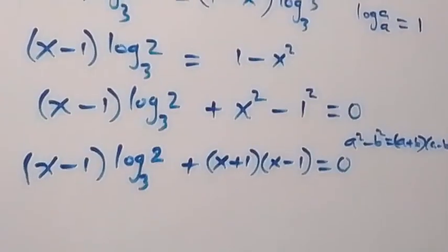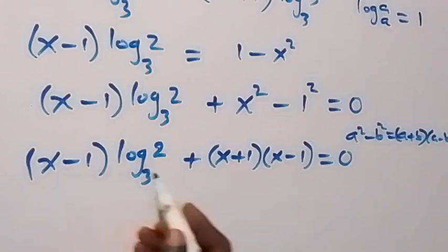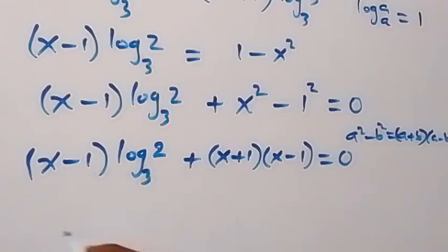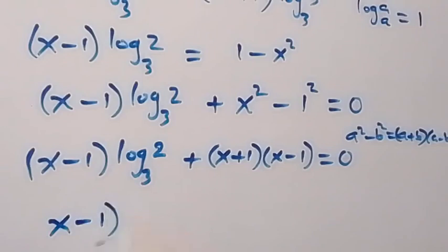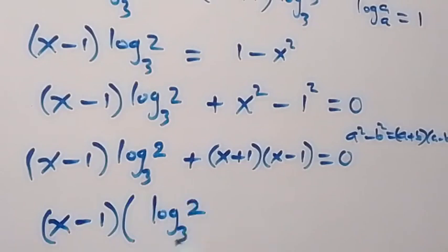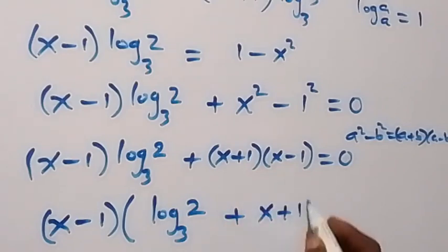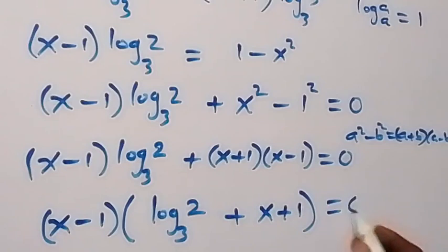From here, x minus 1 is common so let's factor it out. x minus 1 into bracket: all left here is log₂ base 3, plus x plus 1, equals zero.